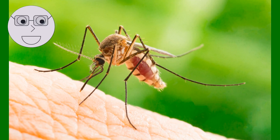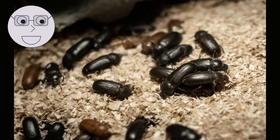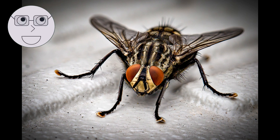Insects also have important roles in the food chain. Insects are eaten by a variety of animals, including birds, fish, and mammals. A bird catching a butterfly, a fish eating a mosquito larva. Insects are also important decomposers, breaking down dead plant and animal matter and returning nutrients to the soil. A beetle breaking down a dead log, a fly laying eggs on a piece of fruit.